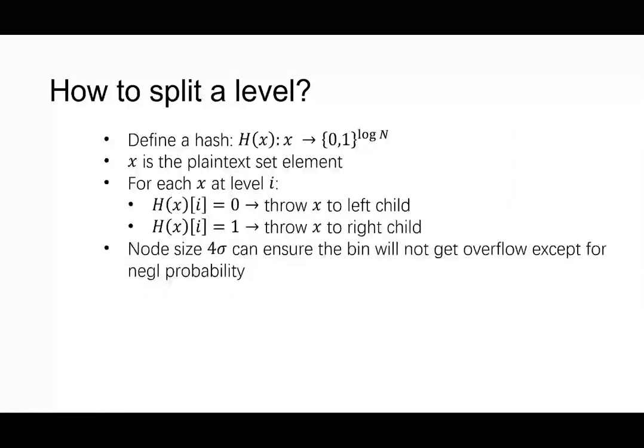So now the question is how to define split. It's actually quite easy because the purpose of split is randomly throw element into left and right child. So we can define a random hash function H(x) map element x to a zero one string and x is a plaintext. And for H(x) at level i, we are going to throw it into the left child if the random H(x) is indicating zero. Otherwise it will be thrown into the right child. And in expectation each bin is going to load sigma elements. And here the capacity of each bin is four sigma. So it will not overflow except for negligible probability.